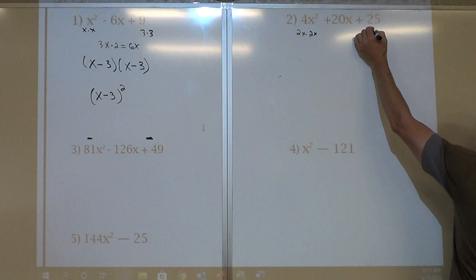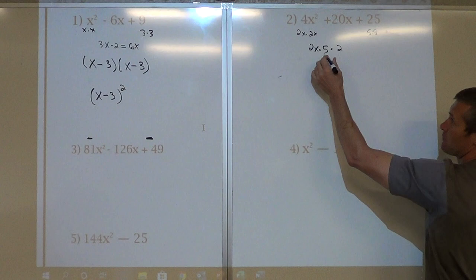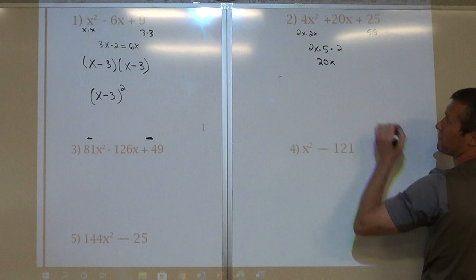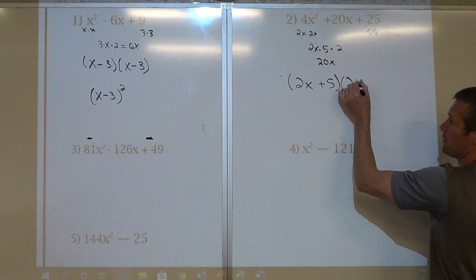2x times 5 times 2. So 2 times 5 is 10, 10 times 2, so this would be 20. Is that my middle term? Yep. So now we can write it in factored form: 2x plus 5 times 2x plus 5, or 2x plus 5 squared.